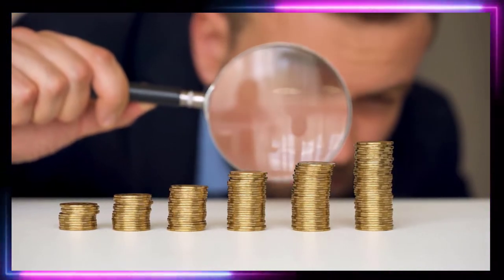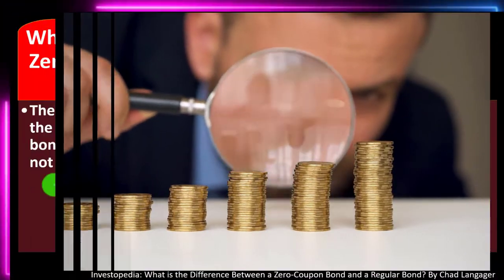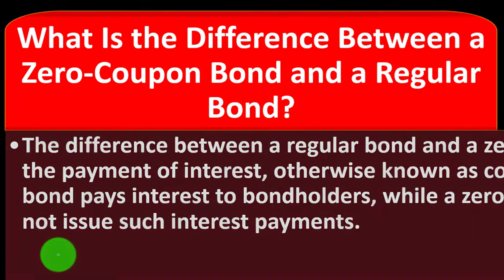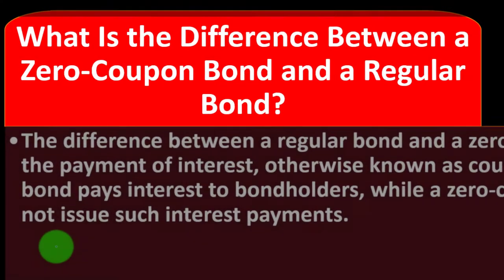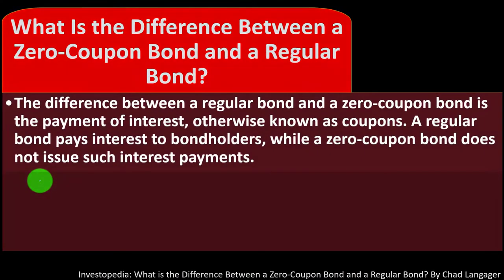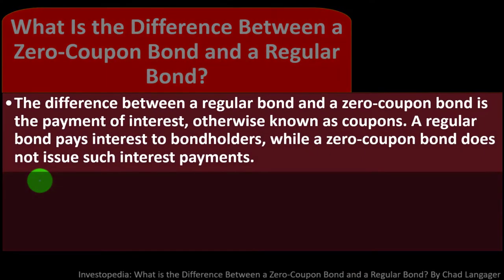Keeping those in mind, we're now asking: what is the difference between a zero coupon bond and a regular bond? The difference between a regular bond and a zero coupon bond is the payment of interest, otherwise known as coupons.